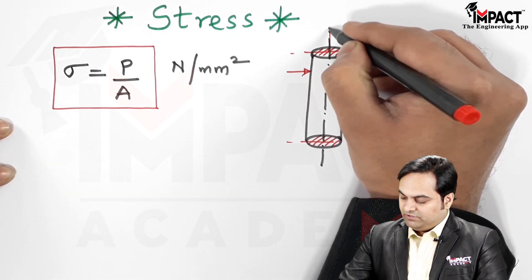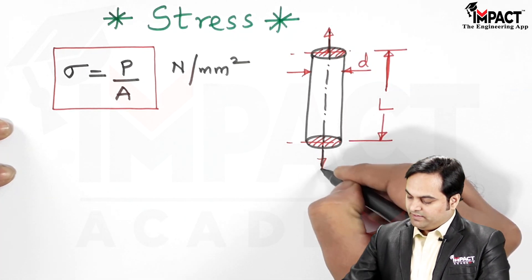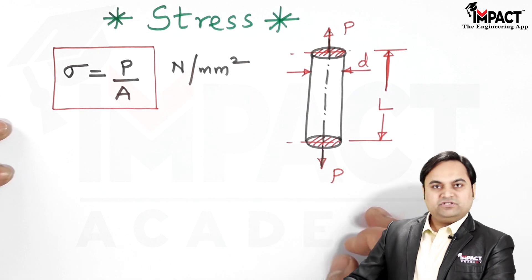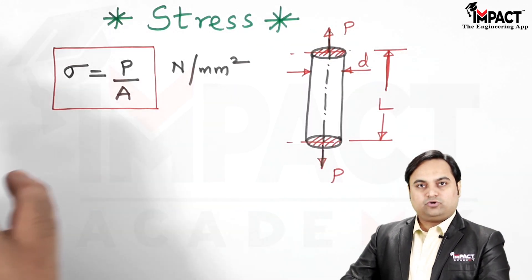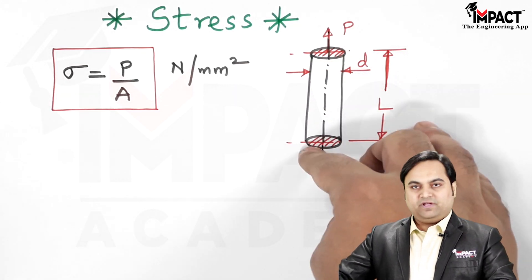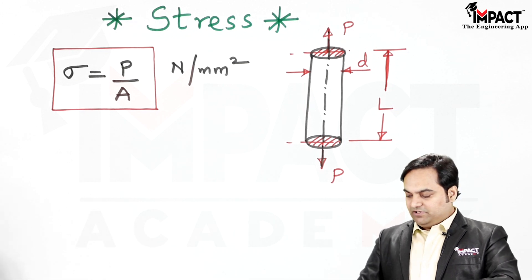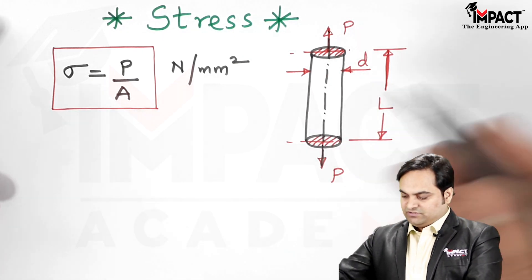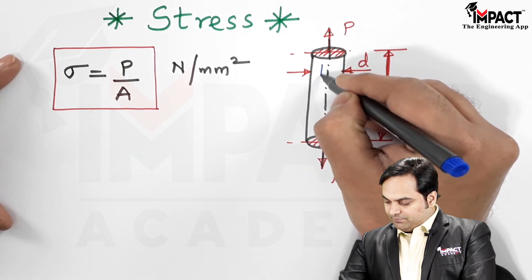Under the action of the applied load, as can be seen here, I am applying a load P which is a tensile load to this rod and the load is passing through the axis. Because of the amount of external loading, there will be internal resistance which will be set up and that would be opposing this load.